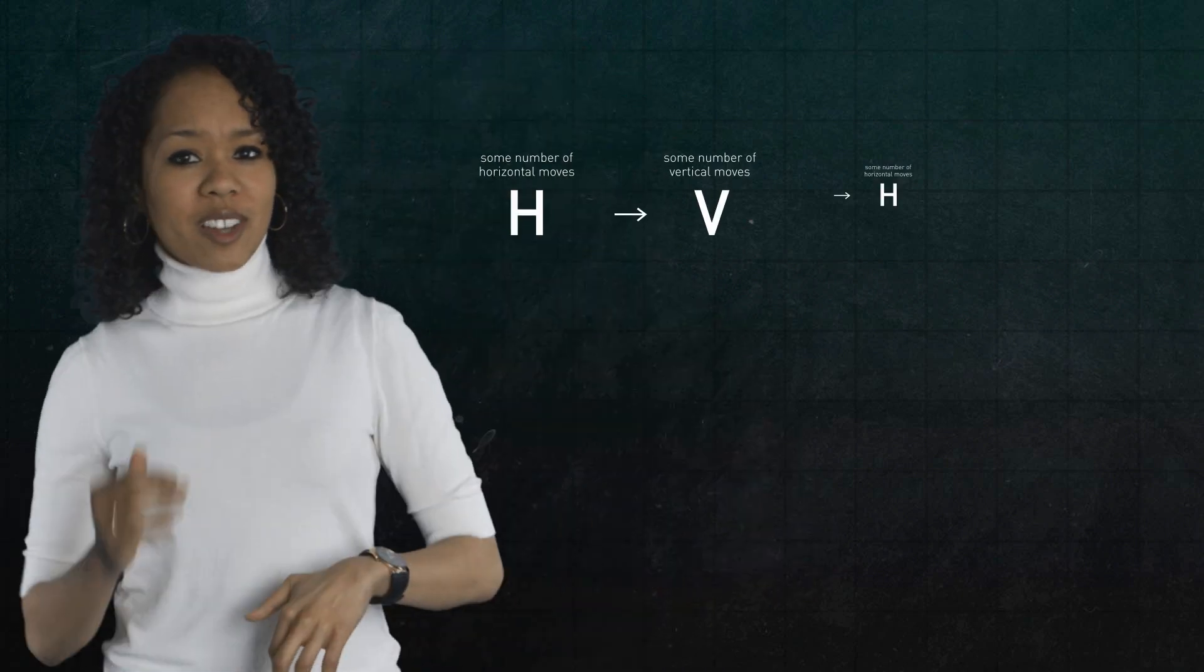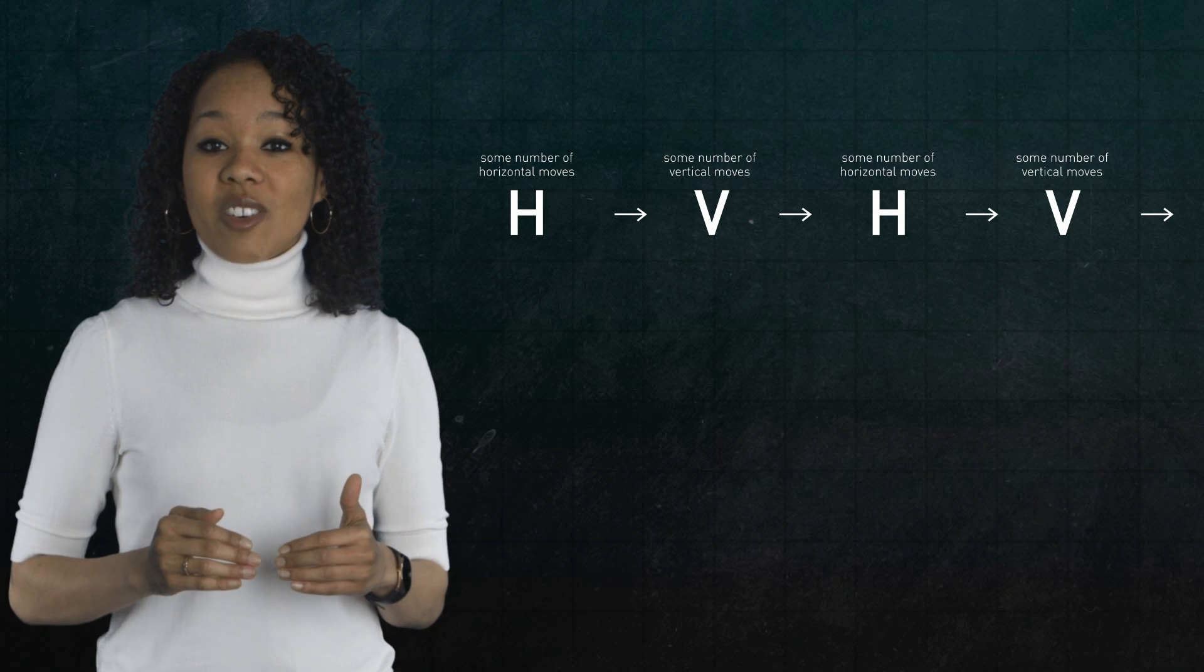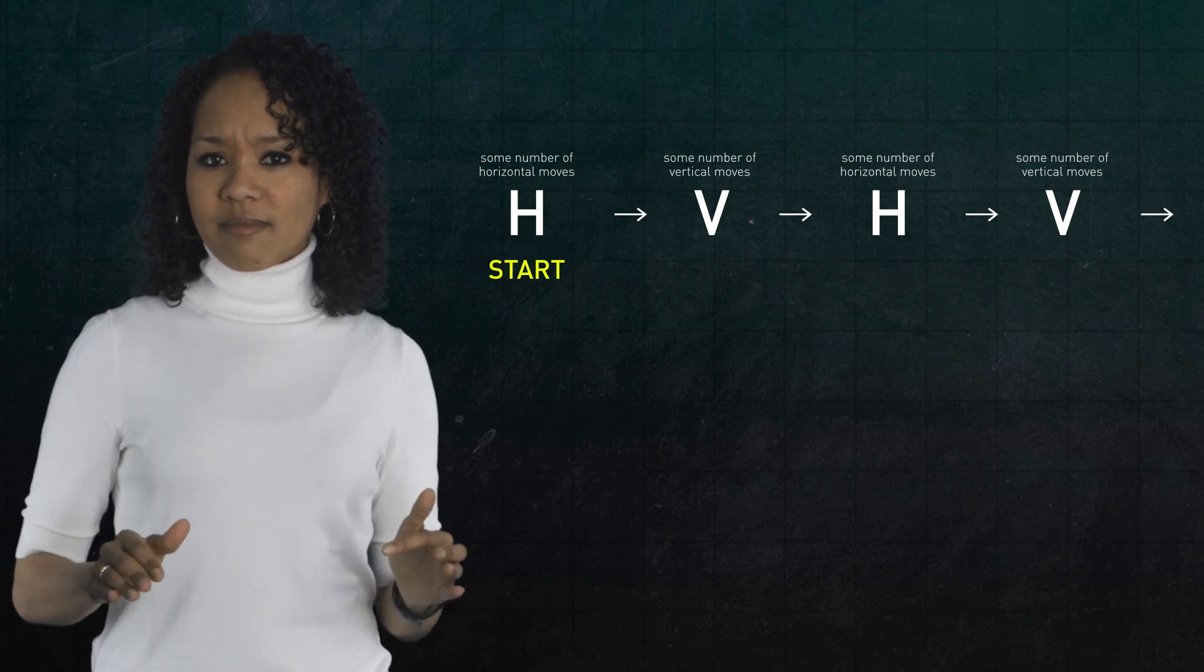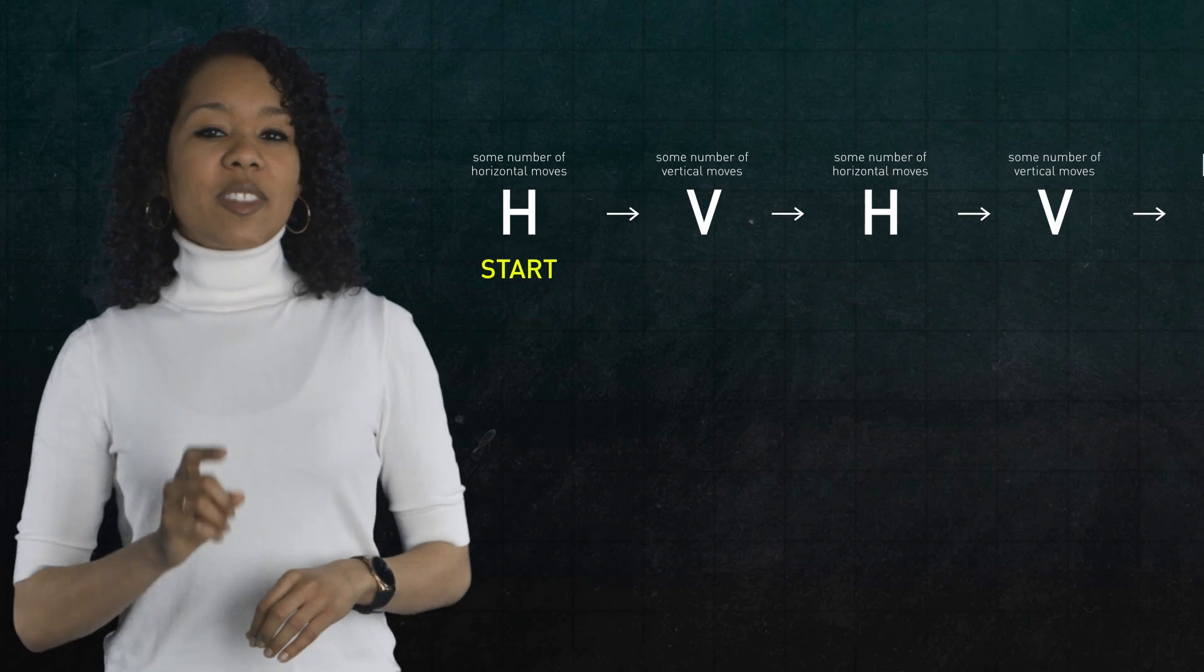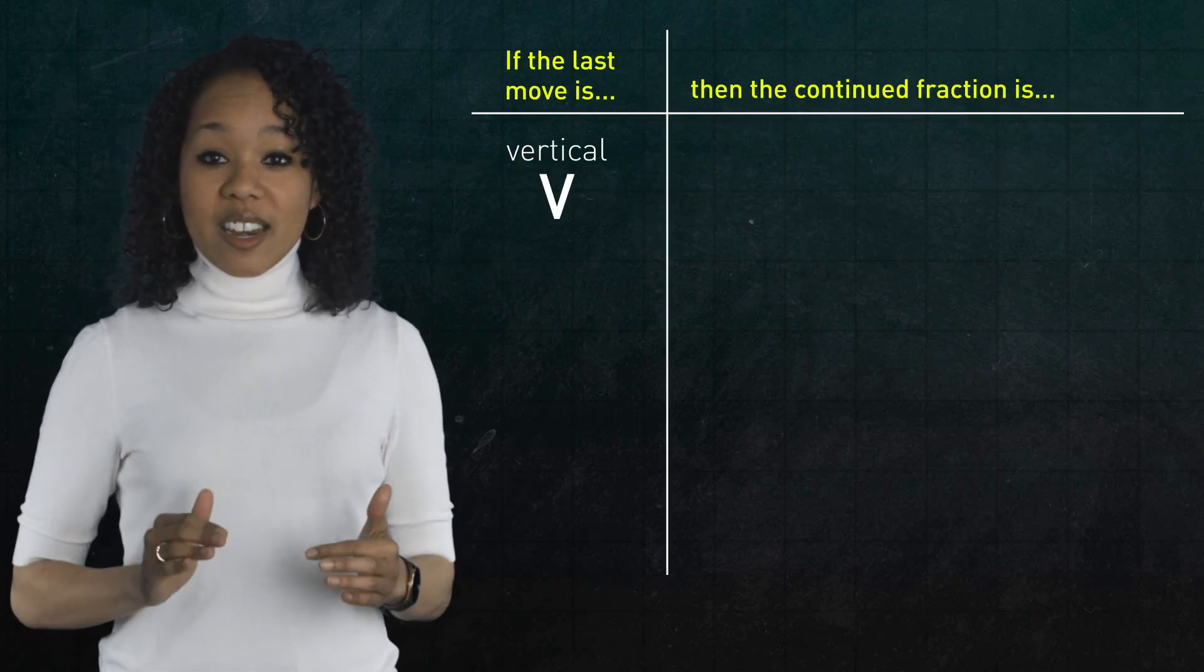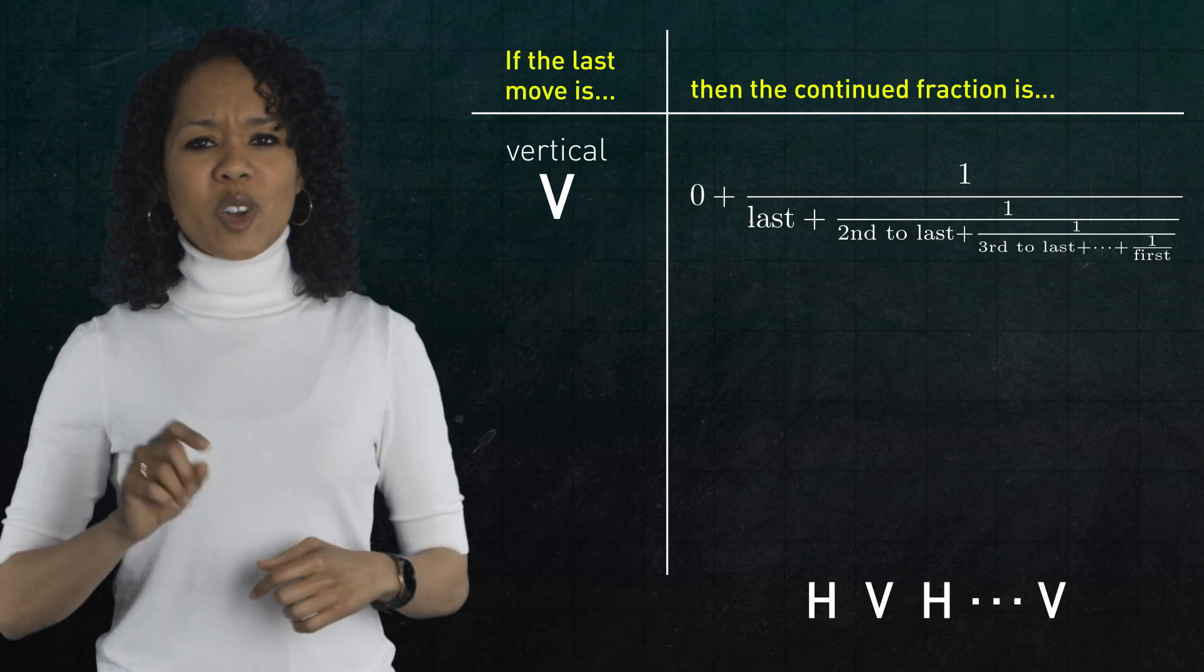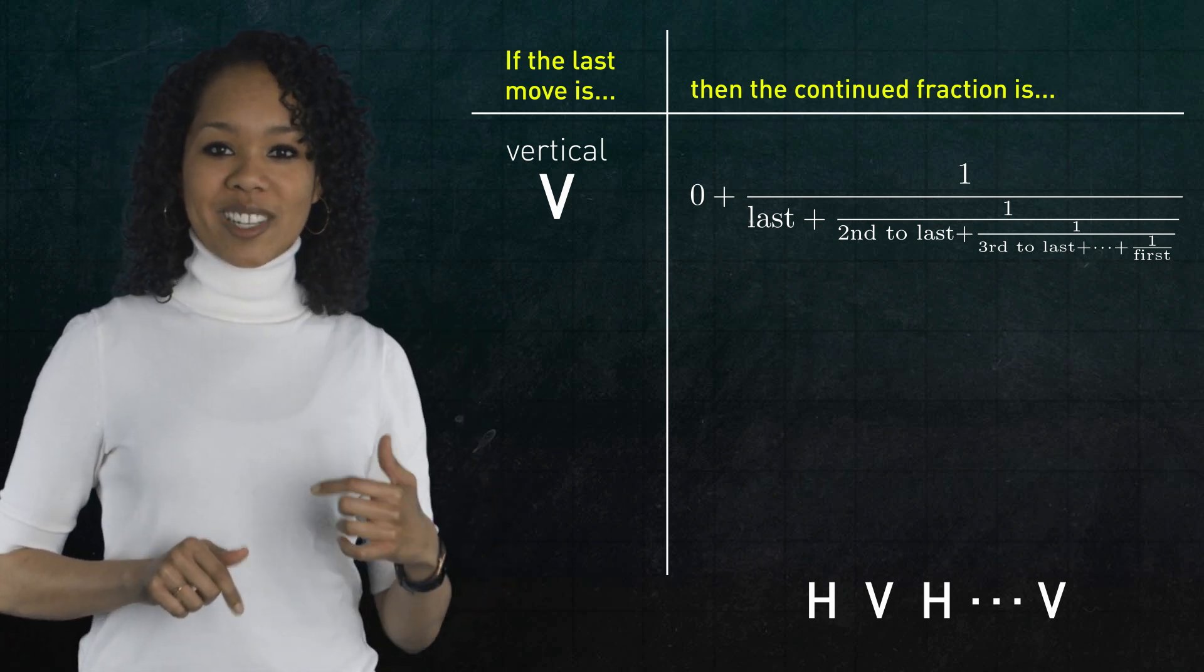Horizontal twist, vertical twist, horizontal twist, vertical twist. The number for the resulting tangle comes from a continued fraction. Here's the rule. Start with a certain number of horizontal twists and then alternate, vertical, horizontal, and so on. If the last move you do is a vertical twist, then the continued fraction is zero plus one over the second to last number in the list plus one over the third to last number in the list and so on.